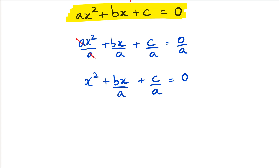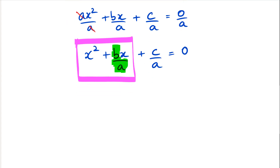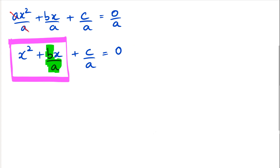Now the next part is completing the square. To complete the square, we look at this part and particularly the coefficient of x. What we have to do is divide the coefficient of x by two, square it, and then add it to both sides. Let me just show you a quick example so you can see how completing the square works.